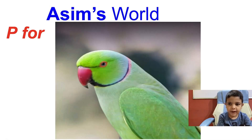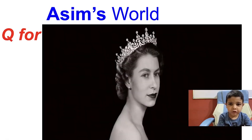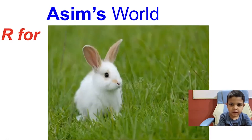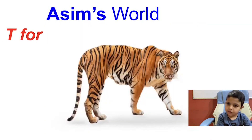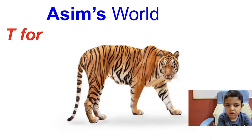B for parrot. Q for queen. R for rabbit. S for sheep. T for tiger.